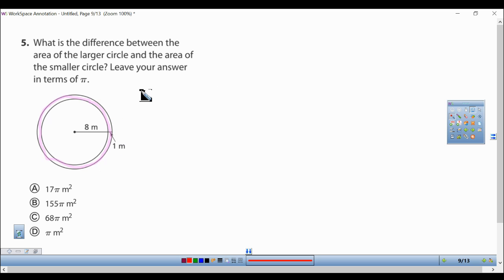So let's find the areas. The area of the large circle is going to be equal to pi times the radius squared, and the area of the small circle.